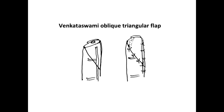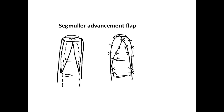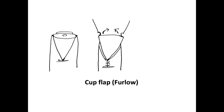One disadvantage of the Venkataswami flap is that the distal portion may be insensate, as it is supplied by the contralateral digital nerve which is not included in this flap. The segmolar advancement flap is also a modification of the VY flap where VY flaps are harvested based on both neurovascular bundles, so the entire flap is sensate. There is another modification in the Volar VY advancement flap where the flap is taken wide and the distal edges are brought towards each other and sutured to provide bulk and padding to the newly reconstructed fingertip pulp.